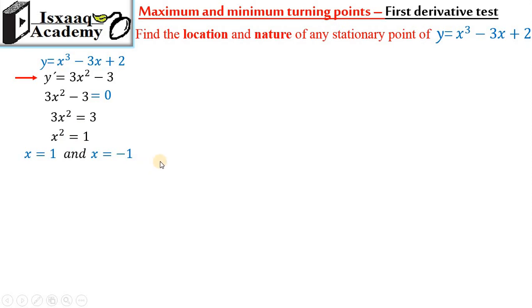This is the x-coordinate. That means x is 1 and negative 1. This is where the slope equals zero — the stationary point.